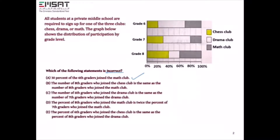Option B states that the number of 8th graders who joined the chess club is the same as the number who joined the math club. At chess club, 40% of 8th graders participate, and at math club, also 40% of 8th graders participate. So that statement is also correct.